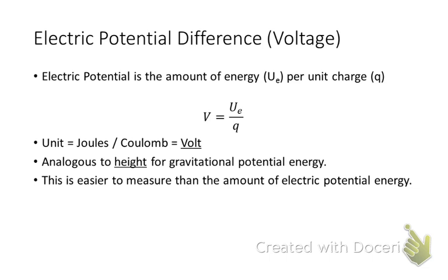The electric potential, which is different than the electric potential energy, simply refers to the amount of energy per unit charge. It's kind of analogous to height, and I'll draw you an example in just a minute. The unit for electric potential is the volt, named after an Italian feller by the name of Alessandro Volta, who invented the first crude battery. And again, it's analogous to height for gravitational potential energy. This is easier to measure than the amount of electric potential energy. You just need a voltmeter to do that, and voltmeters are cheap. You get them from Lowe's for like $5.